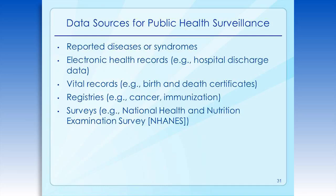Surveillance relies on a variety of public data sources to monitor different conditions and situations. These might include administrative data systems such as billing records, laboratory surveillance such as PulseNet, environmental, vector, or animal surveillance — such as sentinel chickens and mosquito trapping for West Nile virus — as well as pharmacy data, laws and policies, and 911 calls.